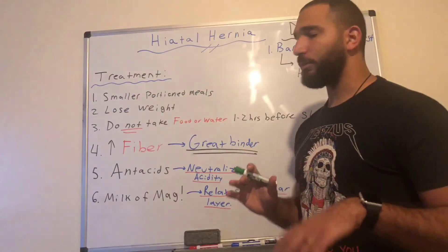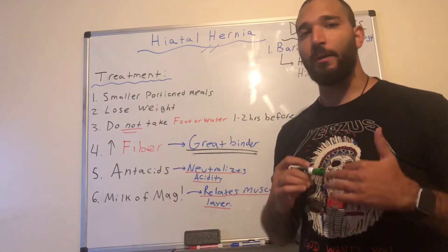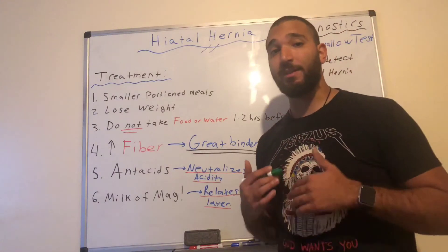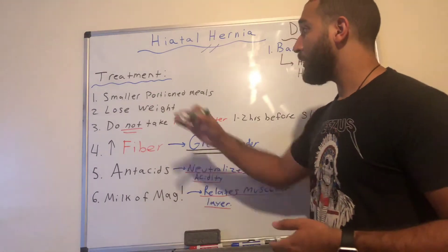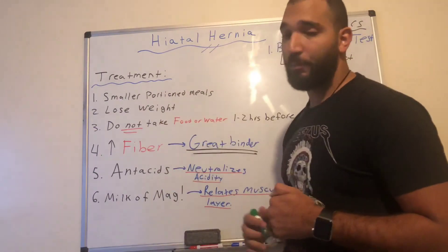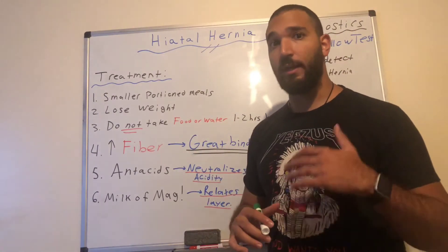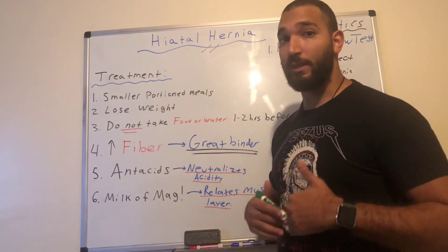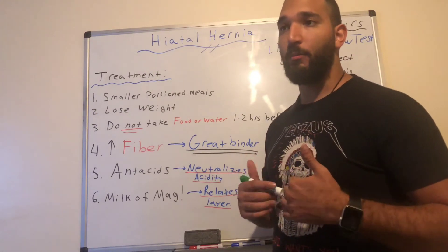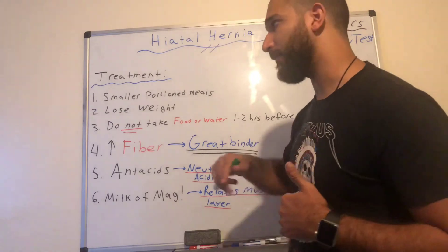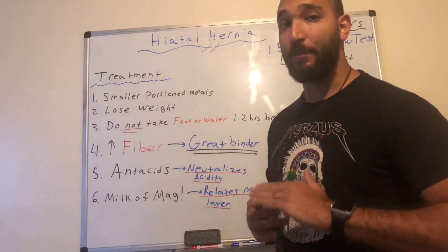A lot of the treatments for hiatal hernia involve decreasing abdominal pressure and neutralizing acidity so the patient doesn't experience heartburn. Patients should have smaller portion meals, because larger meals increase abdominal pressure and cause more issues with the hernia penetrating through the diaphragm. Patients should also lose weight, as this will decrease abdominal pressure.